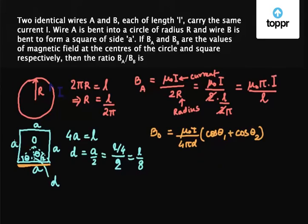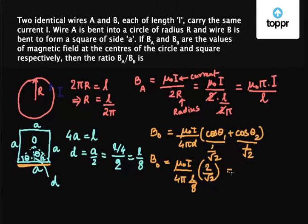Now notice that this is a square. So θ₁ equals θ₂ equals 45 degrees. So we have this value cos 45 degrees is 1 upon root 2. So the value of B₀ comes out to be μ₀I upon 4π. We substitute the value of D which is L by 8 into 2 upon root 2, which equals 2√2 μ₀I upon πL.